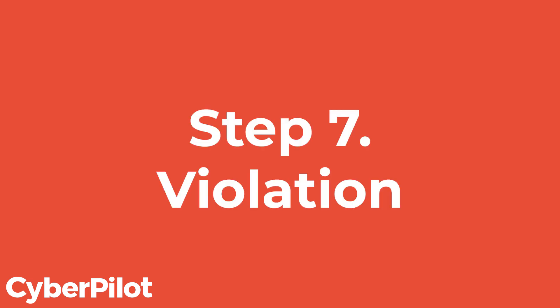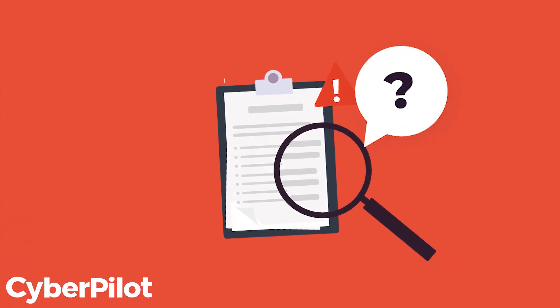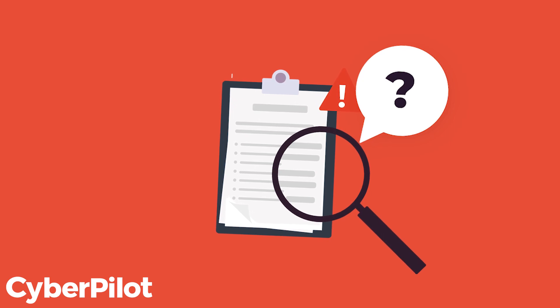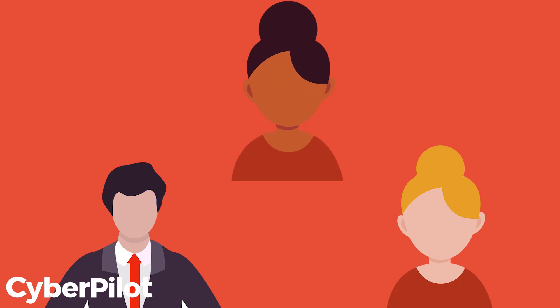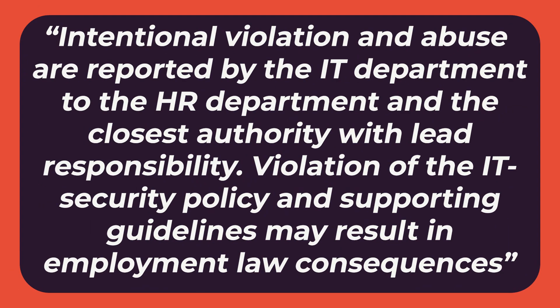Step seven: violation. This part deals with what happens when someone intentionally violates the IT security policy. You must decide whose responsibility it is to deal with violations — it could be the HR department, the person responsible for the IT department, or the CEO. In our template, we've written: 'Intentional violation and abuse are reported by the IT department to the HR department and the closest authority with lead responsibility. Violation of the information security policy may result in employment law consequences.' Remember to fit the template to your organization's needs — if you don't have an IT or HR department, designate someone else.